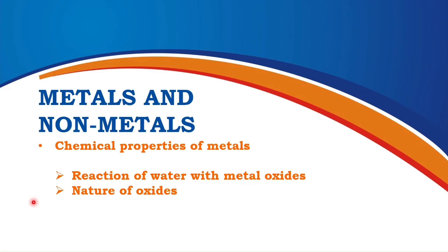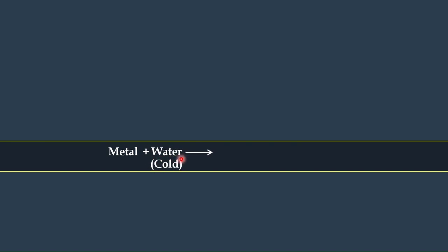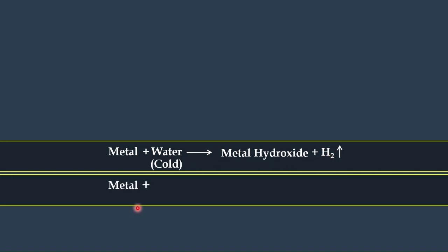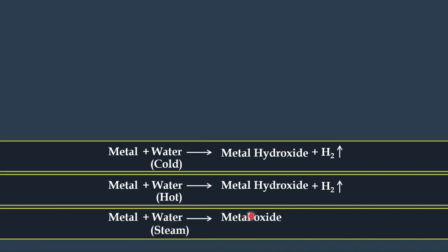Now let us see the reaction of metals with water. Metals reacting with cold water produce metal hydroxide and release hydrogen gas. Metals reacting with hot water also produce metal hydroxide and release hydrogen gas. Metals reacting with steam produce metal oxide and release hydrogen gas. All you need to know is that metals react with water and produce a metal oxide and hydrogen gas.